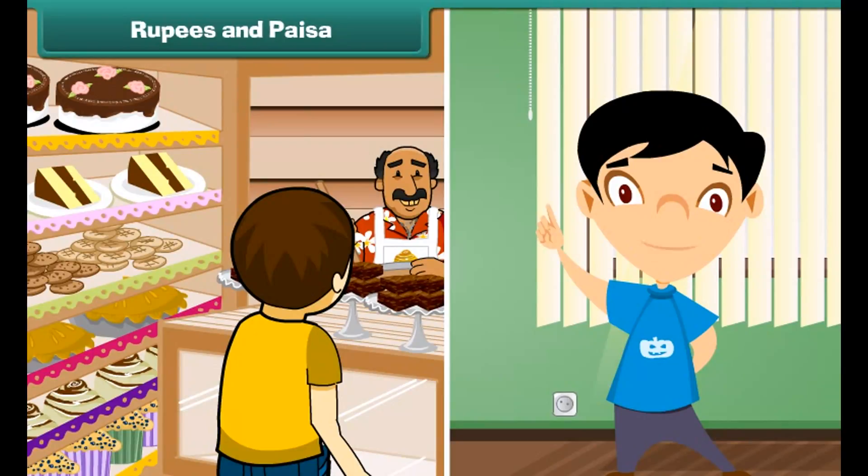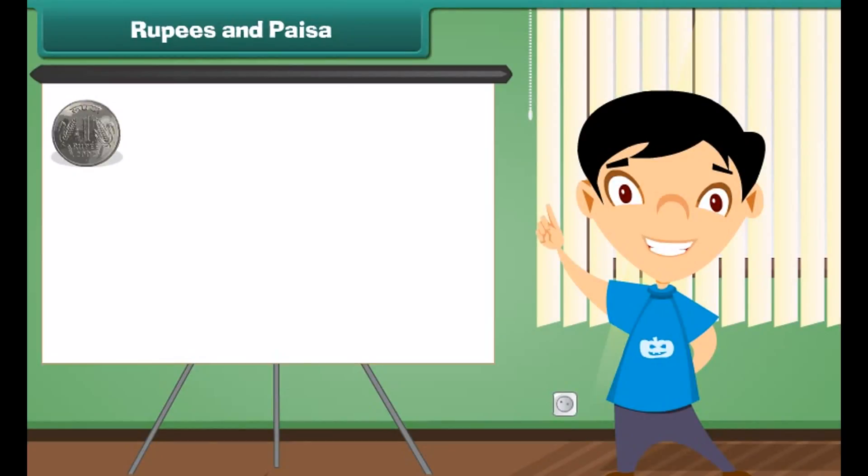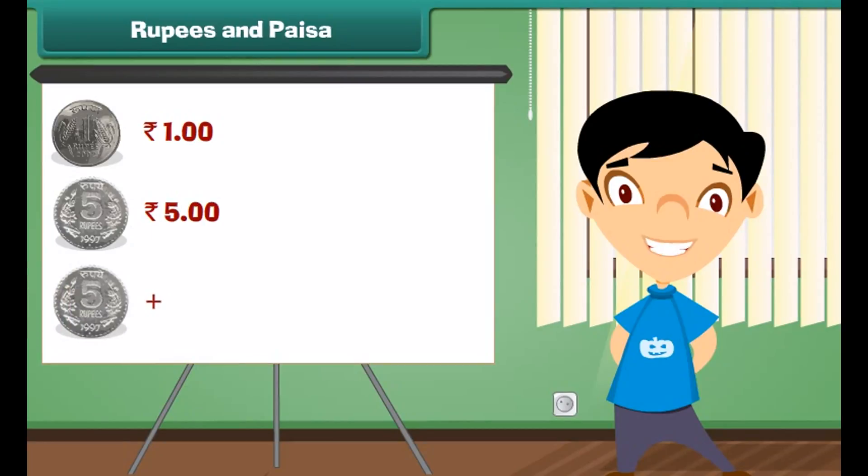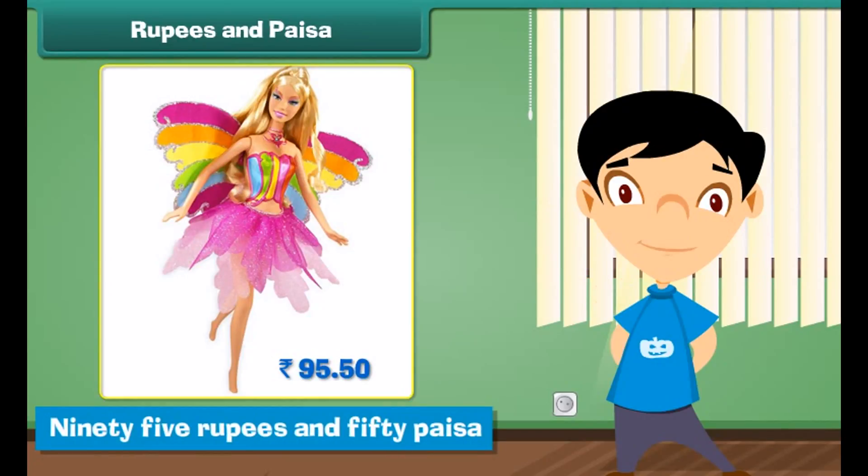When we go to market, sometimes shopkeeper tells the amount in rupees and paise both. Let me show the correct way to write the price. 1 rupee is written as Rupee 1. 5 rupees is written as Rupees 5. 7 rupees and 50 paise is written as Rupees 7.50.